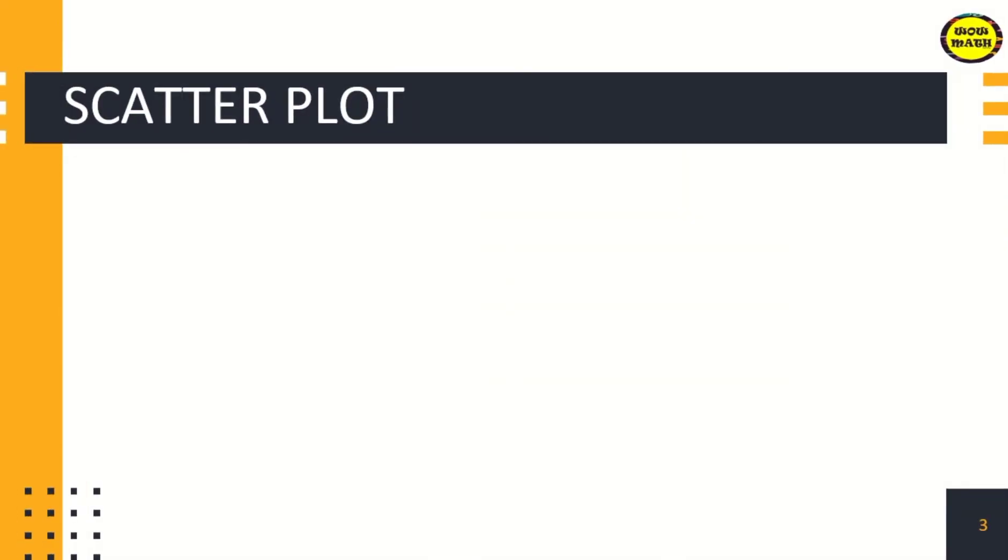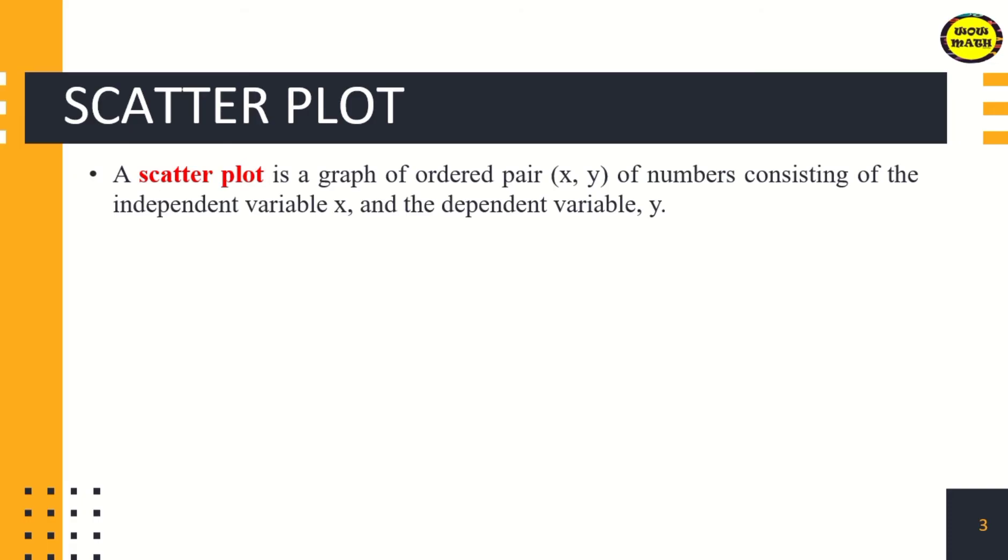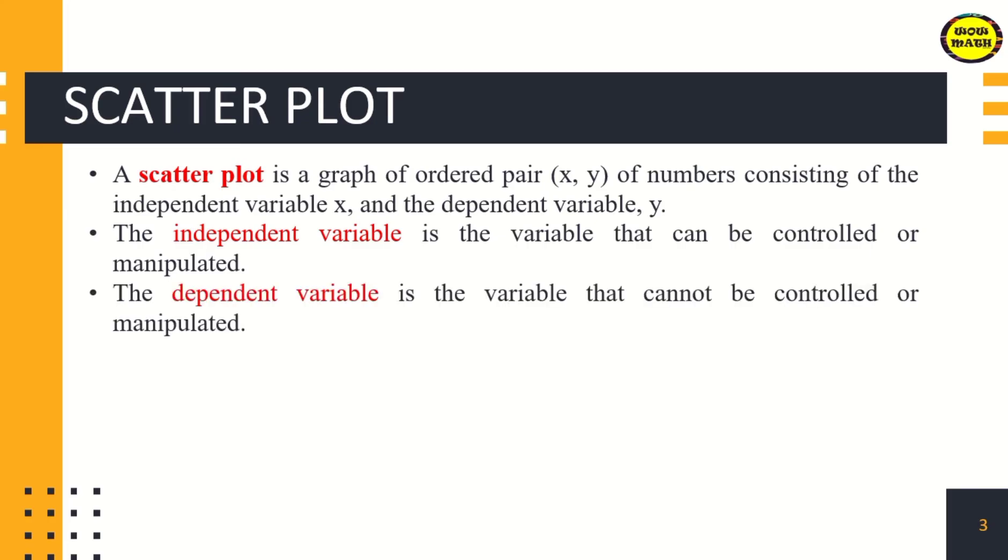First is the scatter plot. A scatter plot is a graph of ordered pairs x and y of numbers consisting of the independent variable x and the dependent variable y. The independent variable is the variable that can be controlled or manipulated. The dependent variable is the variable that cannot be controlled or manipulated. The independent variable is plotted on the horizontal axis and the dependent variable on the vertical axis.